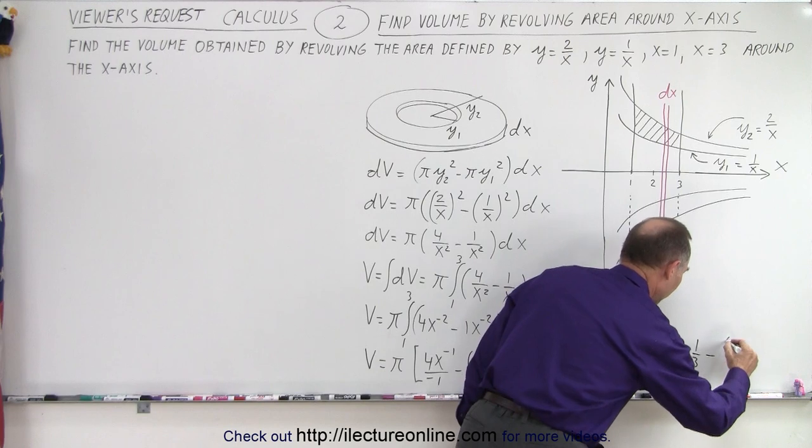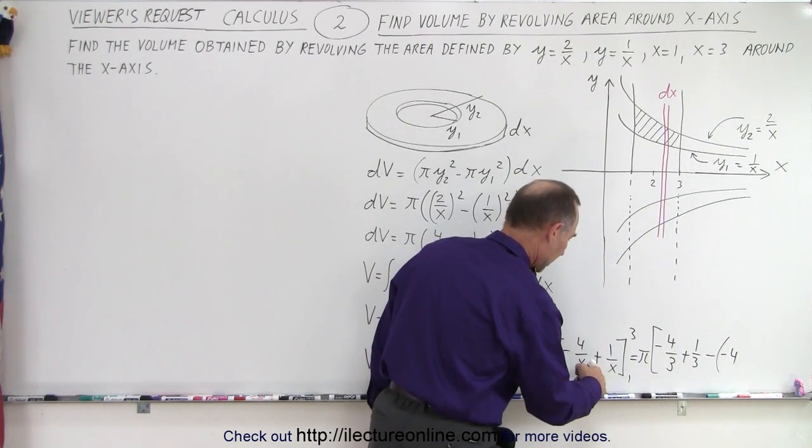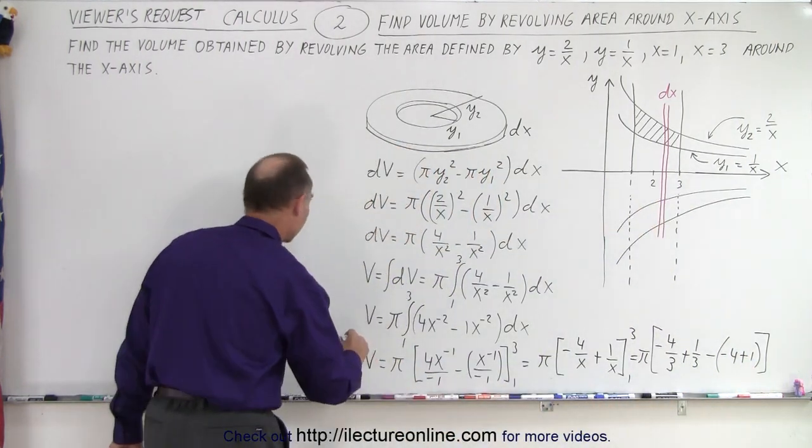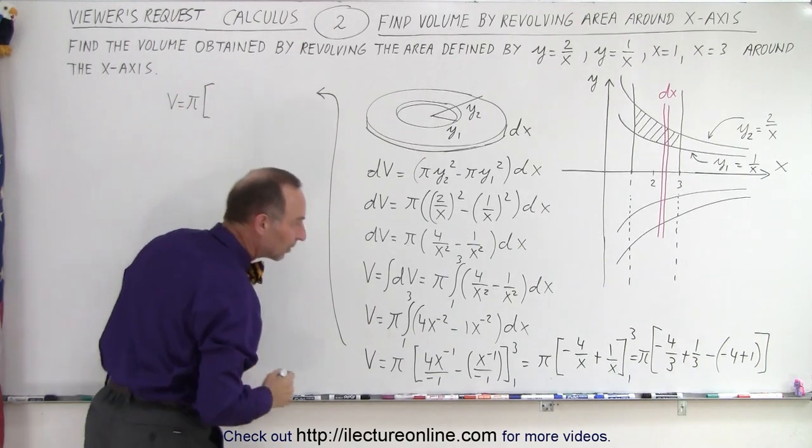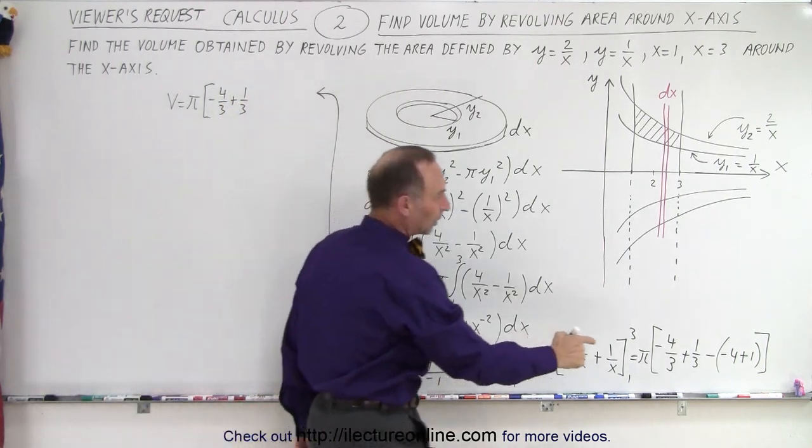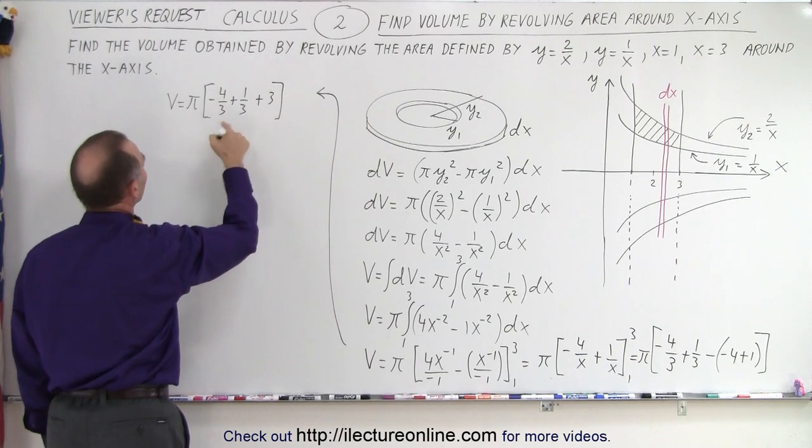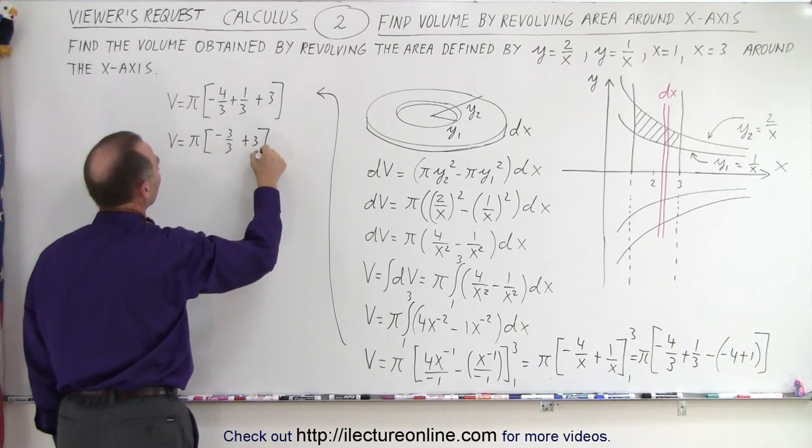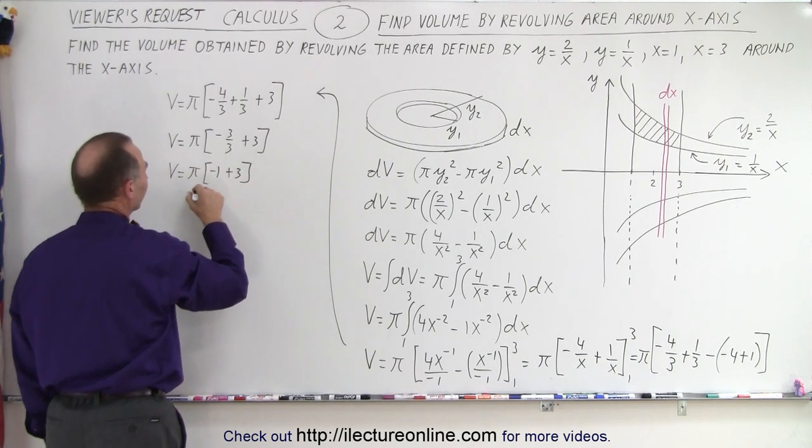Then subtract from that when we plug in the lower limit: -4 plus 1. So we have volume equals π times (-4/3 + 1/3) minus (-4 + 1). The minus times minus becomes plus 3. We can add these fractions: -4 + 1 is -3/3, plus 3. So V equals π times (-1 + 3), or finally, the volume equals 2π.